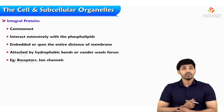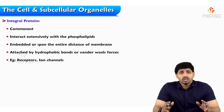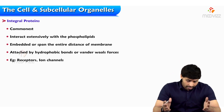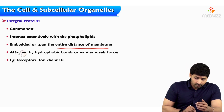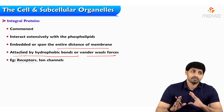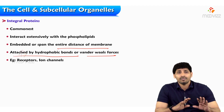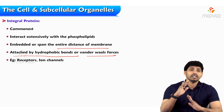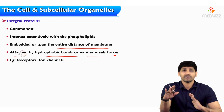Integral proteins are the most common compared with the peripheral proteins. They interact extensively with the phospholipids. They are embedded or span the entire distance of the membrane and are attached by hydrophobic bonds or van der Waal forces. Hydrophobic bonds mean the proteins are made up of hydrophobic amino acids — amino acids that are not soluble in water. They have functional groups which are hydrophobic, and these hydrophobic groups make bonds with the hydrophobic tails of the lipid bilayer — the phospholipids.